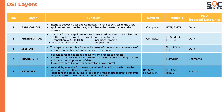Next, we have layer 3 — the network layer. The network layer works for the transmission of data from one host to another host located in a different network. It takes care of packet routing, that is the selection of the shortest path to transmit the packet from the number of routes available. Devices that work at layer 3 include routers, firewalls, IPS, etc. Protocols include RIP, OSPF, DHCP, and IP. The data is in the form of packets.